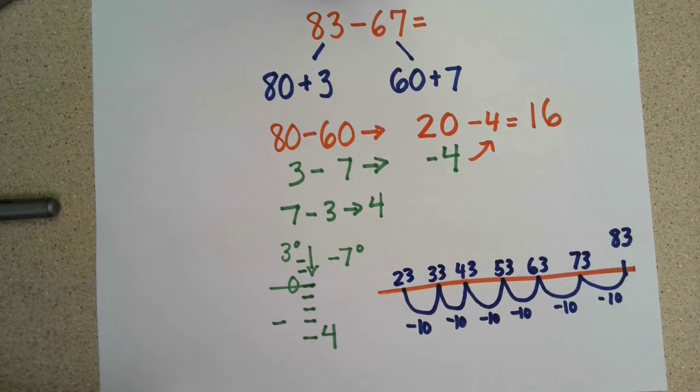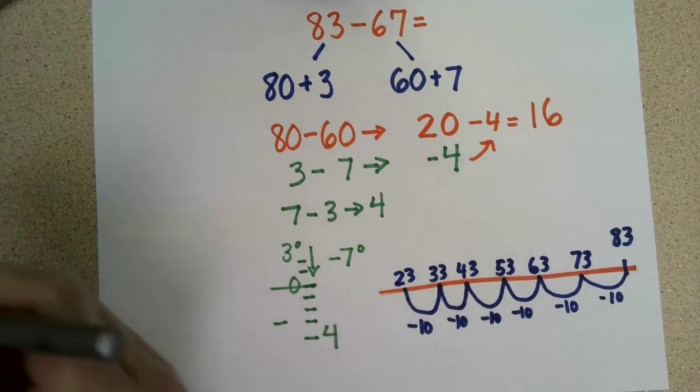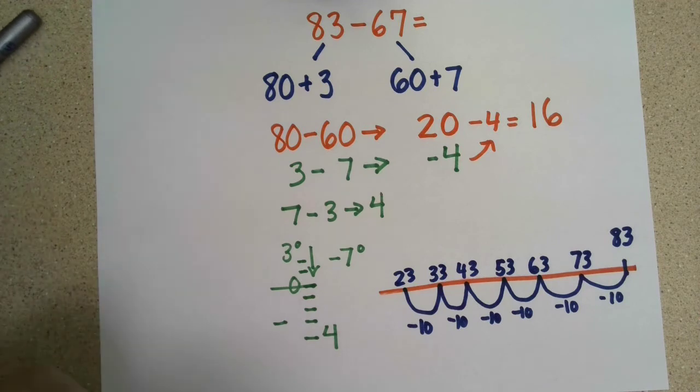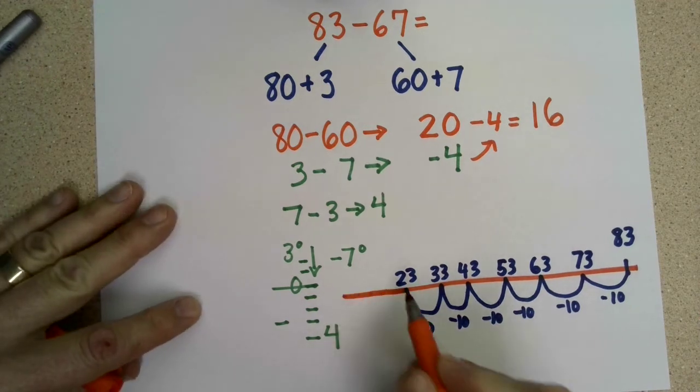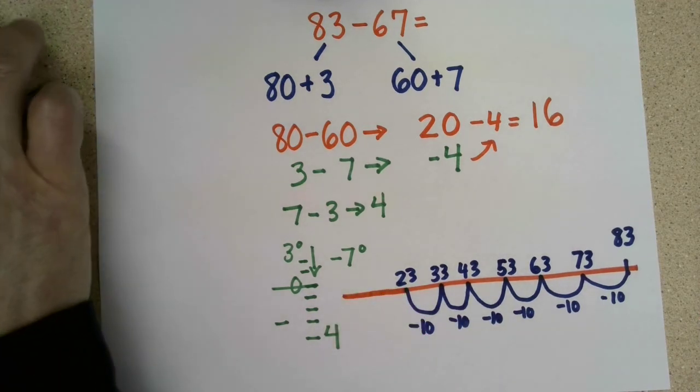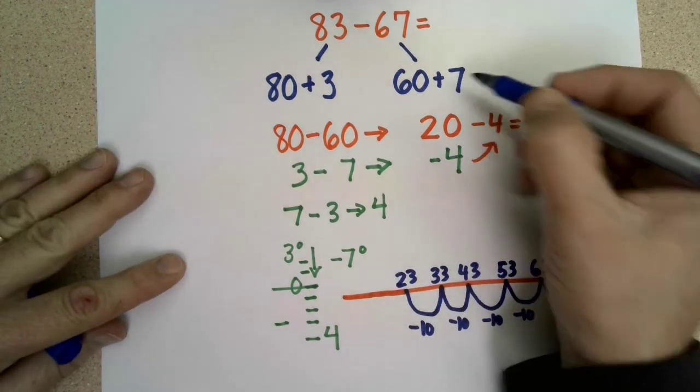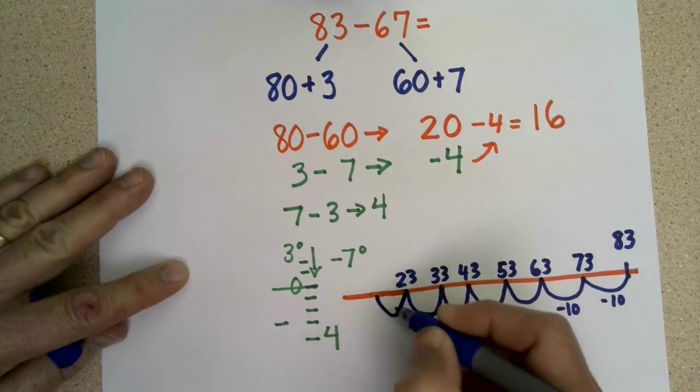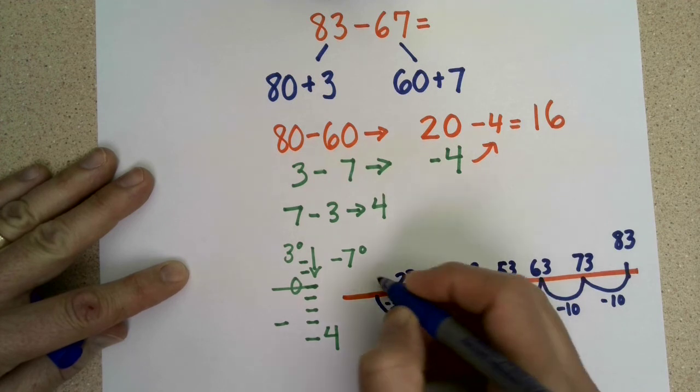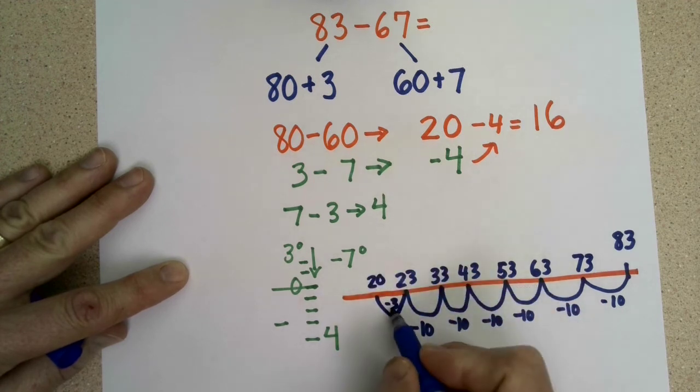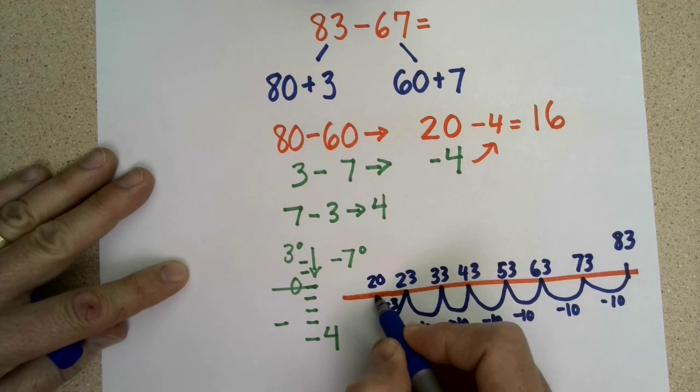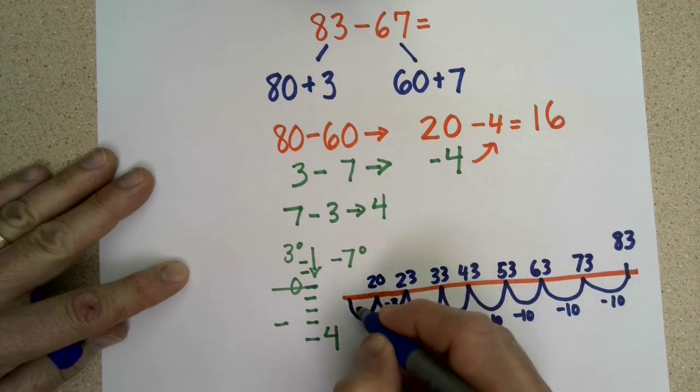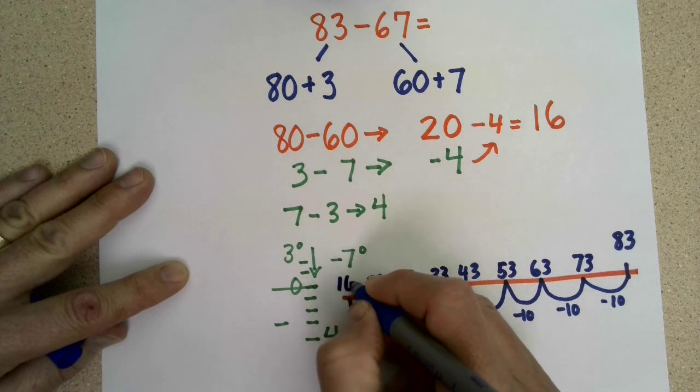Now we're going to have to jump back 7 more. Going to make my line a little bit longer. And I'm going to jump back 7. So I'm going to break 7 up into 3. So I'm going to subtract 3 first to get to 20. And 3 plus 4 is 7. So I'm going to go back 4 more. And 20 minus 4 is 16.